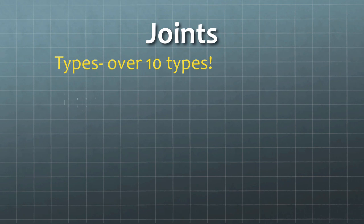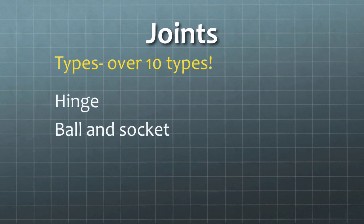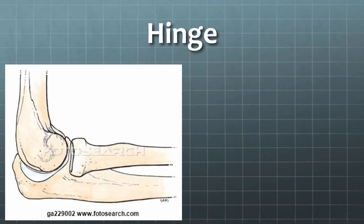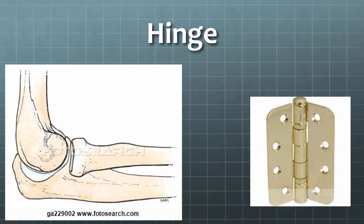Places where bones come together are called joints. There are over ten different types of joints; we're going to focus on three: a hinge joint, ball and socket, and a fixed joint. A hinge joint — the upper arm bone is the humerus, one of the lower arm bones is the radius, and the other is the ulna. Where your elbow moves, that's called a hinge, because it looks like the hinge of a door.